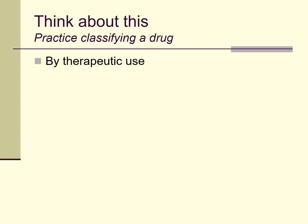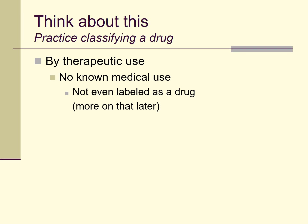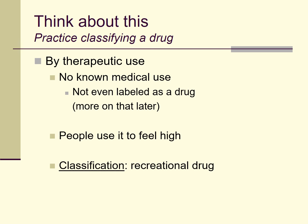Another way to classify this drug is by its therapeutic use. But in this case there is no therapeutic or medical use. It's not even labeled as a drug — the name 'bath salts' is given to it to disguise the fact that it's a drug, so it can be sold semi-legally in gas stations or other places where people who know what it is can buy it without scrutiny from law enforcement or medical professionals. If we classify by therapeutic use, we might just call it a recreational drug, since people use it simply to feel high.